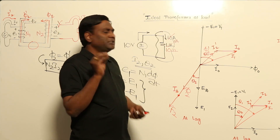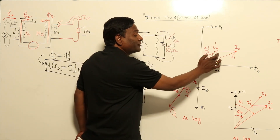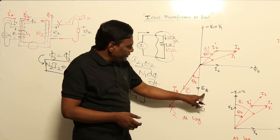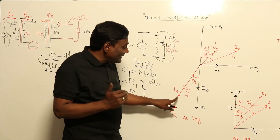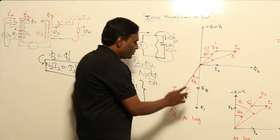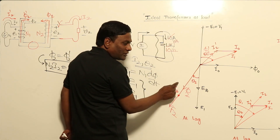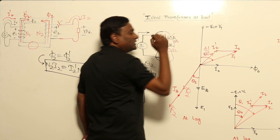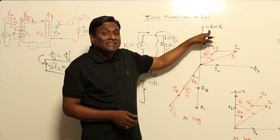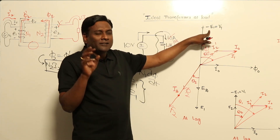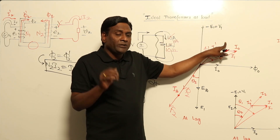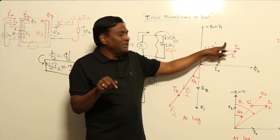So in the phasor diagram, the heart of it is that I2 and I2-dash are drawn on opposite sides because the fluxes they create — φ2 and φ2-dash — are opposing each other. That is the first way of understanding. The angle between E2 and I2 is θ2, and the angle between E1 and I2-dash is also θ2. Therefore −E1 is taken as V1.